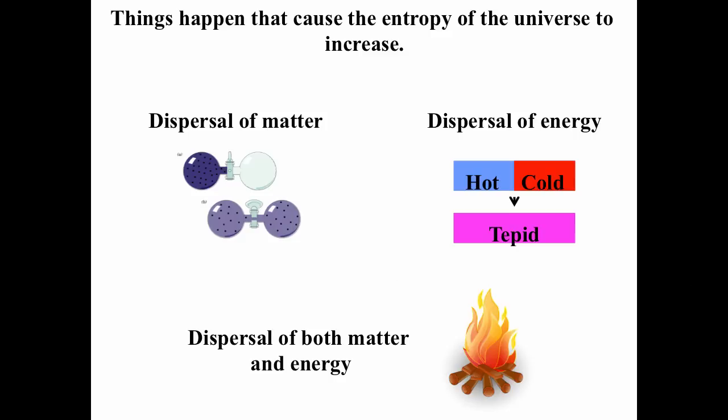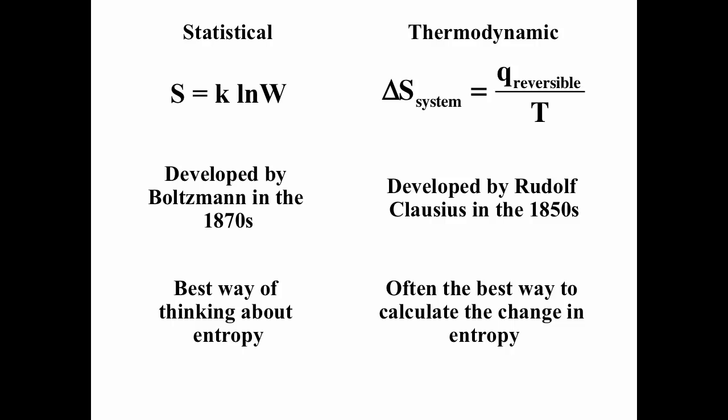Things that happen cause entropy of the universe to increase, and you can imagine dispersal of matter. We have two bulbs connected by a stopcock: in one bulb we have gas, in the other vacuum. We know that as soon as we open the stopcock the gas will distribute between both bulbs. We can also think about dispersal of energy: two pieces of metal, one hot one cold, in thermal contact — heat transfers from the hot to the cold. There are also processes that disperse both matter and energy, like combustion, which produces gas particles and disperses energy.